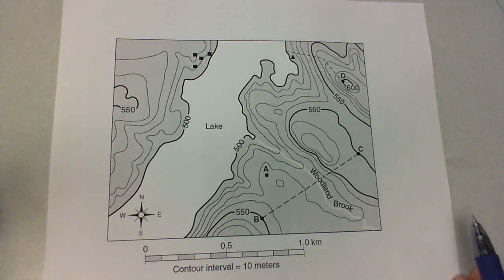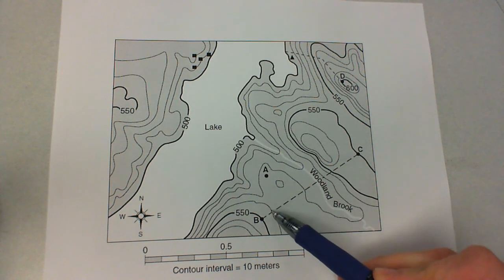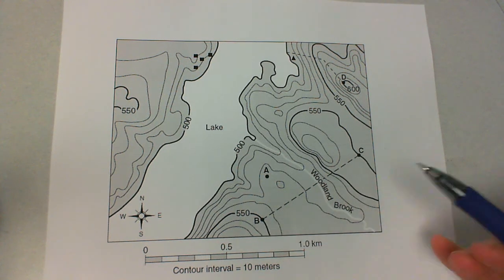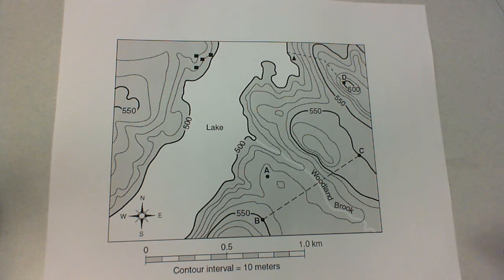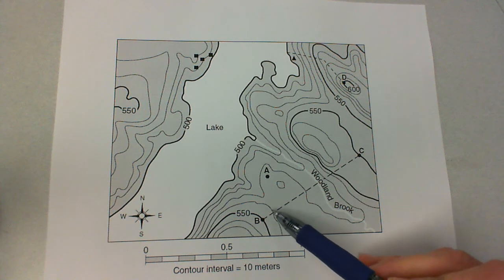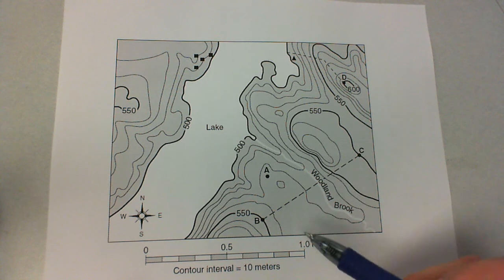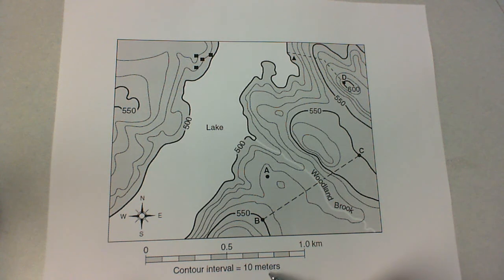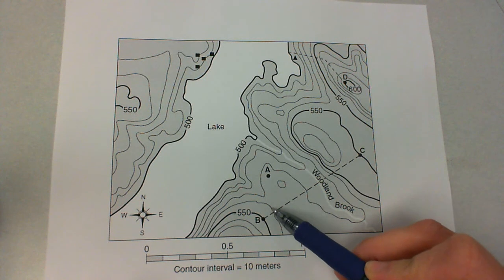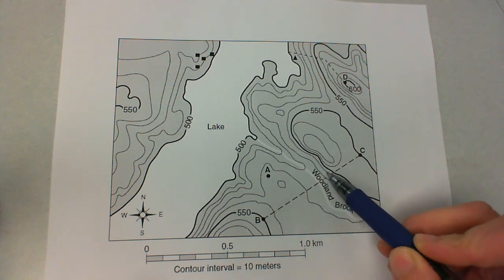The next thing that we want to do is to label all of the contour lines that come in contact with this line. And to label them, we need to figure out what the interval is. We can see that the first line here, B, is labeled as 550. But we need to figure out what the ones in between B and C are going to be. If we look at the contour interval, we can see that the interval is 10 meters. So that means each line is changing by 10 meters.